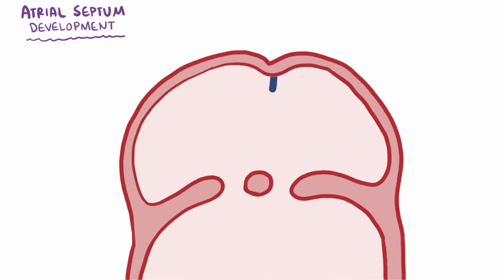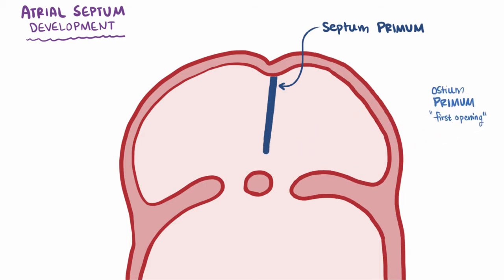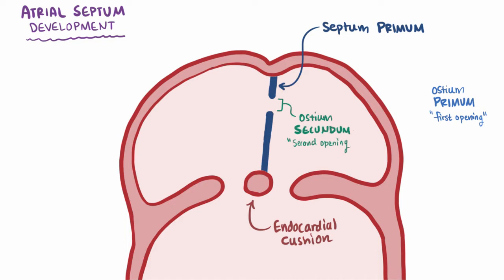When the heart's first developing, a tissue called the septum primum between the left and the right atria grows downward, slowly creating two separate chambers by closing this gap, or ostium primum, which means the first opening. This septum primum then fuses with the endocardial cushion and closes the gap completely. Meanwhile, a hole appears in the upper area called the ostium secundum, or second opening.